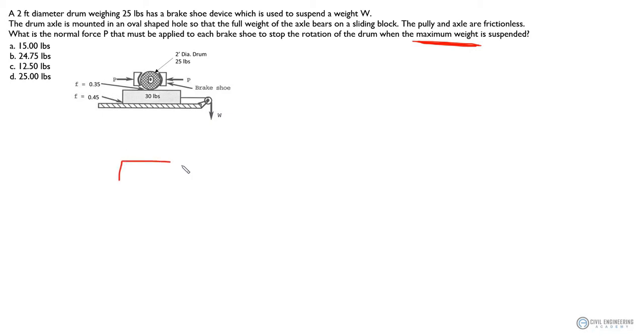So if you draw the free body diagram of this block, this is your 30 pounds block and you have a loading here W, and you will have your frictions at these two surfaces. So the first surface is at the drum and the block and the second surface is at the block and this platform. All right, so when W is at its maximum for this system to take, the full friction should be generated. Right, so F1, this friction F1 of this first interface is at its maximum too.